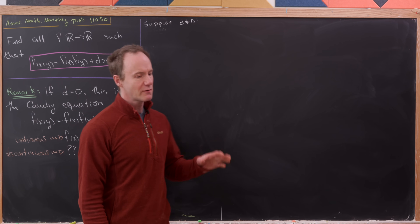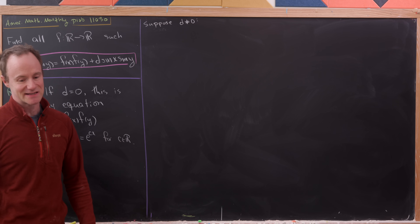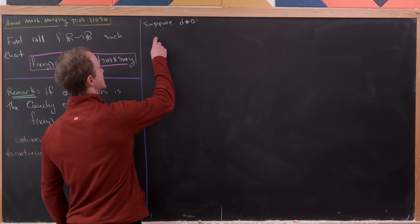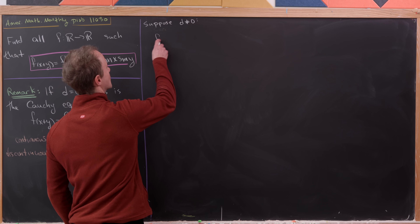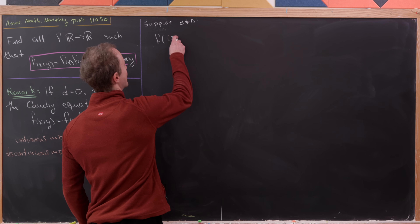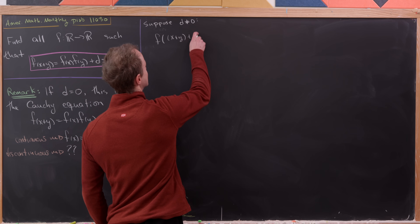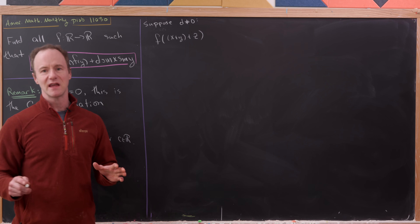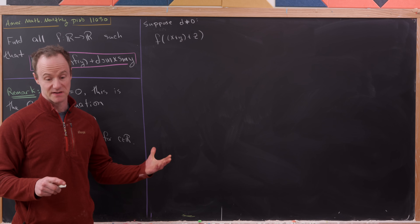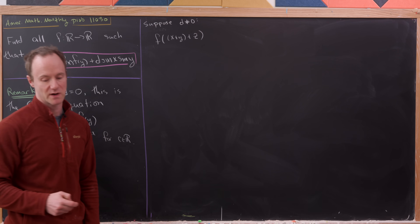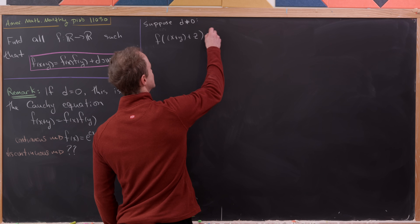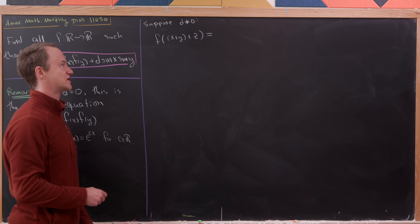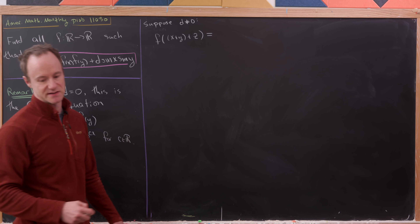What we really want to look at is the case when d is not equal to 0. We'll look at f(x+y+z) and expand it two different ways, based on how we associate x+y+z.